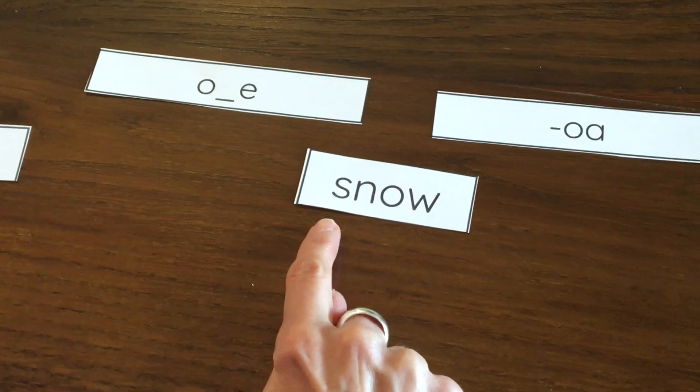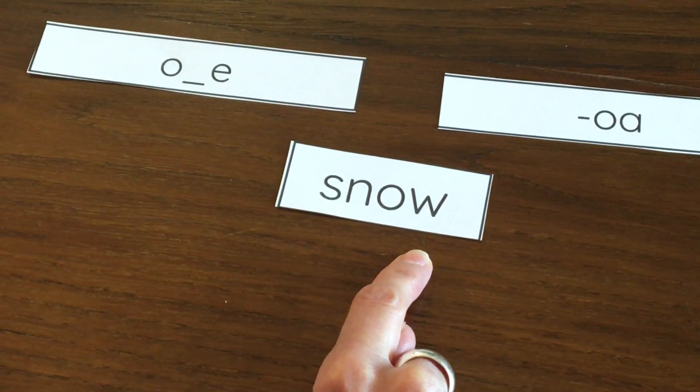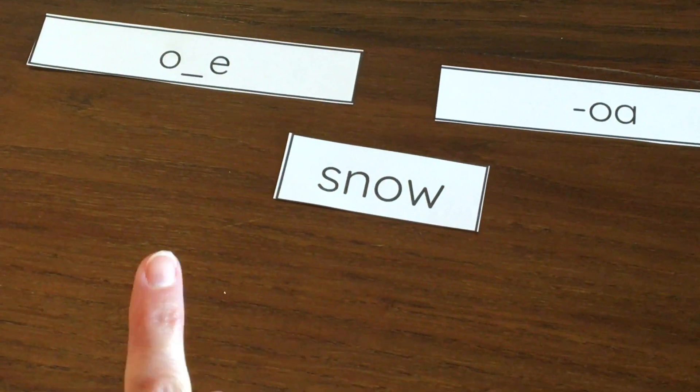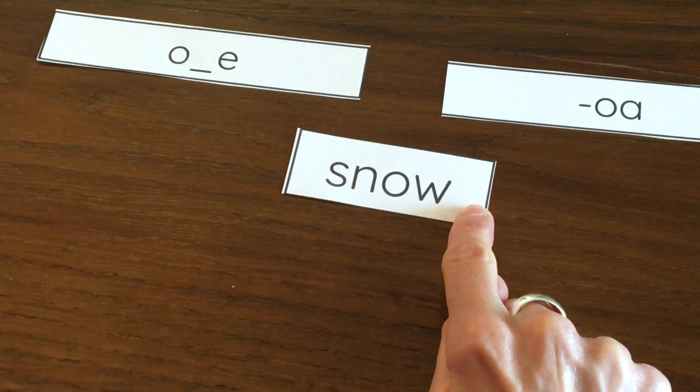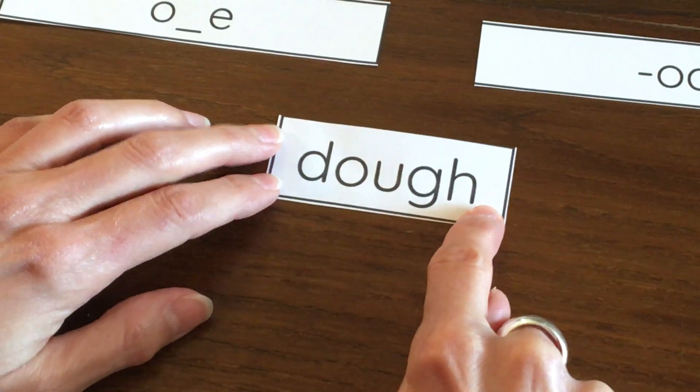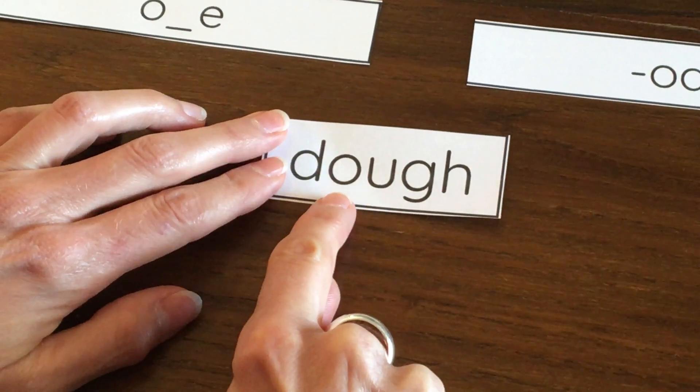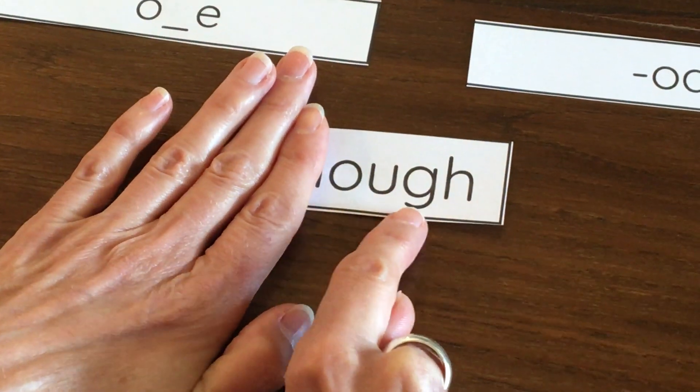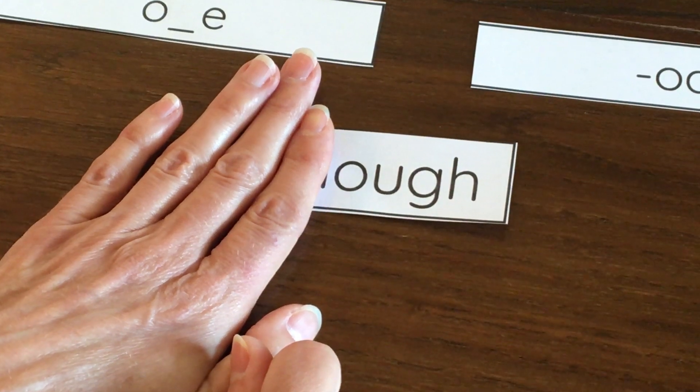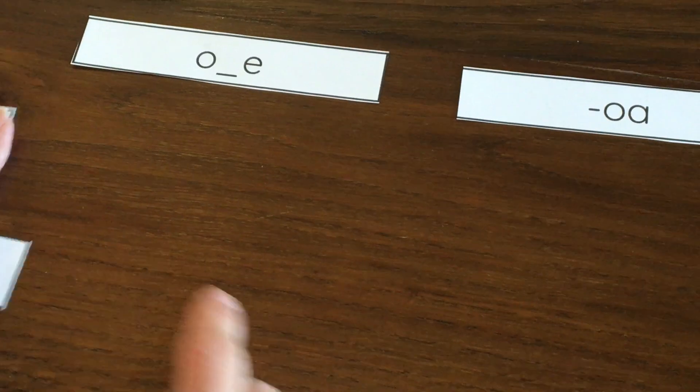This is the word snow. I love the snow. You'll see in many words the letters O-W making the O sound, but we're not going to look at those today. And then this long word is dough, like we make cookie dough to make cookies. And the O sound has all these letters O-U-G-H. That's another way to make the O sound, but again, we're not going to look at those words today.